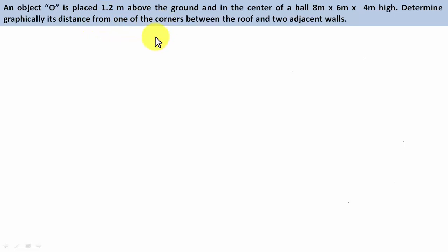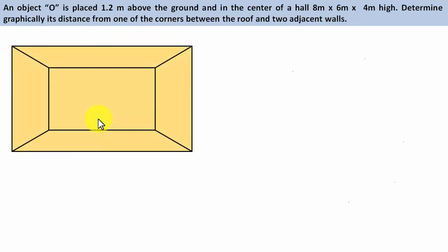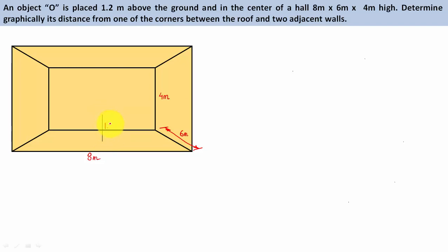In this problem we're talking about a hall whose dimensions are given, an object, and one of the corners at the top on the roof. So let's have a hall here — the length is 8 meters, the breadth is 6 meters, and the height is 4 meters. There is an object right at the center of the hall, placed at a height of 1.2 meters. Let the name of the object be represented by O.